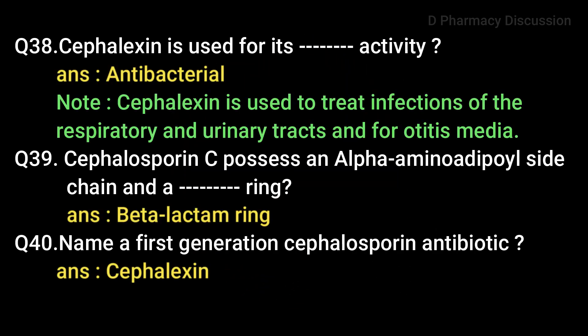Cephalexin is used for its antibacterial activity — it is used to treat infections of the respiratory and urinary tract, and is also used in the treatment of otitis media, a group of inflammatory diseases of the middle ear. Question 39: Cephalosporin C possesses an alpha-amino adipoyl side chain and a beta-lactam ring. Question 40: Name a first generation cephalosporin antibiotic — answer: cephalexin.